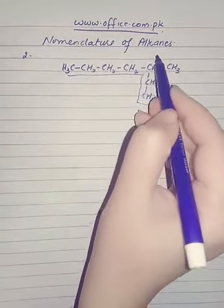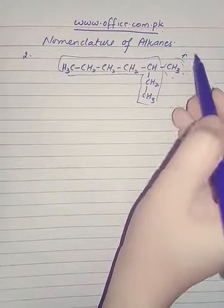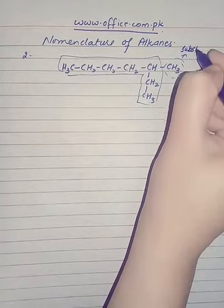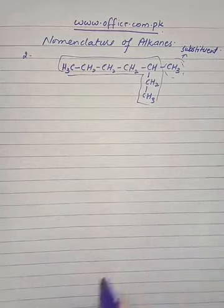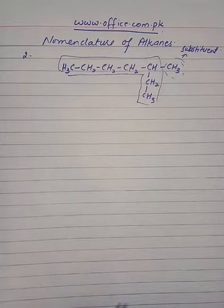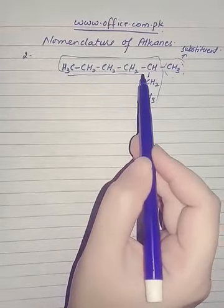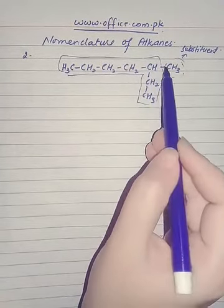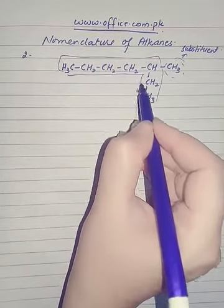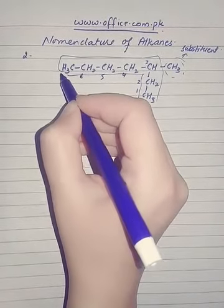This was your parent compound heptane. This extra group which is present is known as a substituent. Now, since this is the longest part and this is the smallest part, and the smallest part is closer to the substituent, you will continue the counting from here: 1, 2, 3, 4, 5, 6, 7.